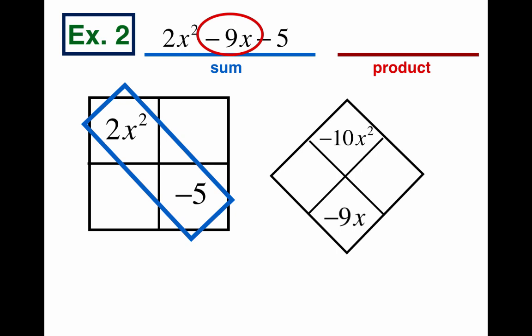It's a diamond problem. What adds and multiplies? So what are we going to use to get negative 10 and negative 9? That's the question. Well, let's think about this. We could do negative 1 times 10, negative 2 times 5. We could do 1 times negative 10 or 2 times negative 5. Those are the only things that really multiply to negative 10. Which one gives us a negative 9? Yeah, 1 minus 10 is negative 9. So we're going to use 1x and negative 10x as our answer to our diamond.